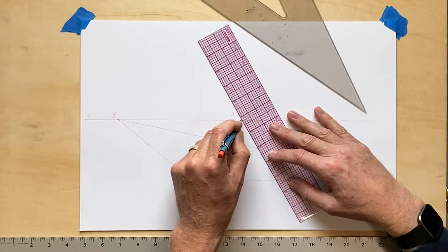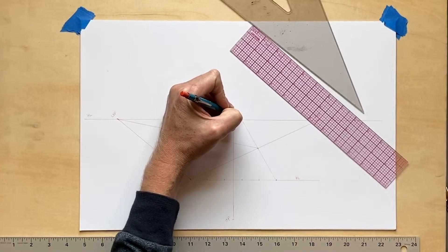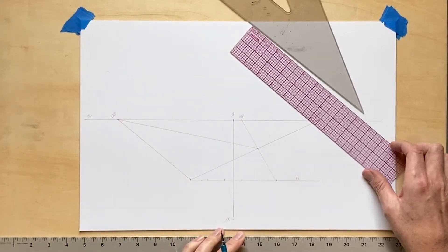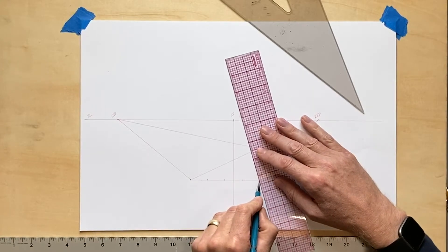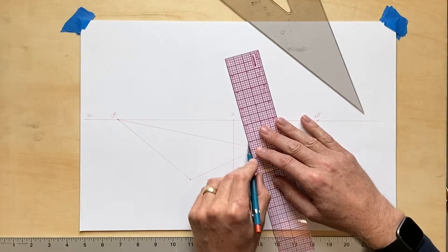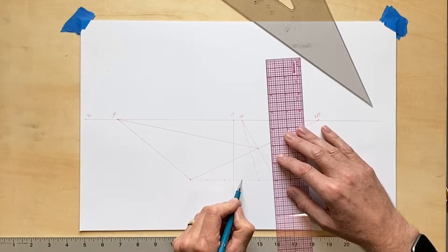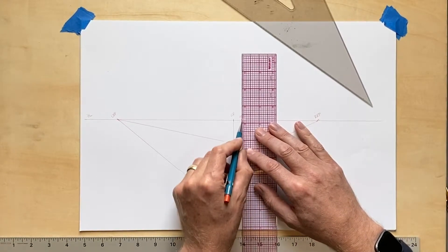Then I take that rightmost measurement and I draw a line through the right back corner to the horizon line and I get a measuring point. And I want to make sure that I mark that MP. That'll distinguish it from vanishing points or center of vision.